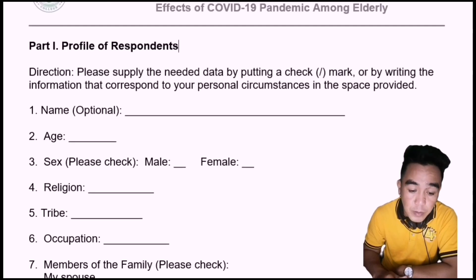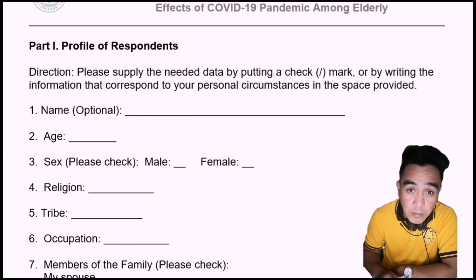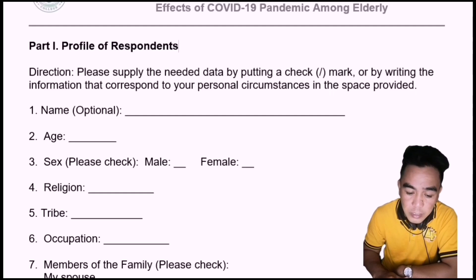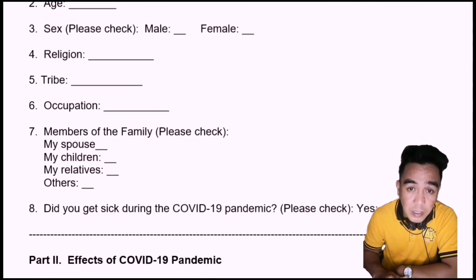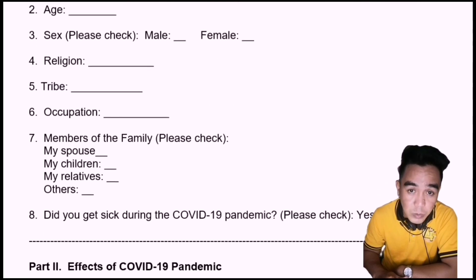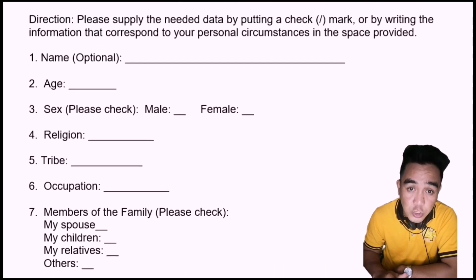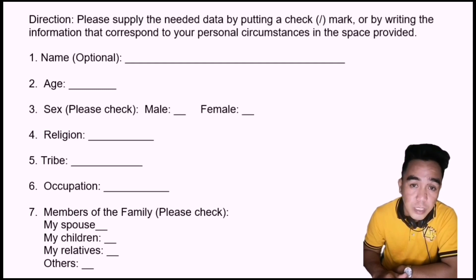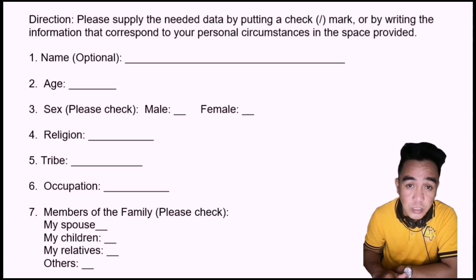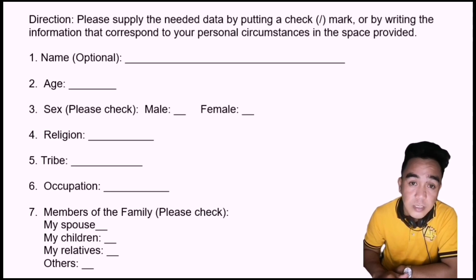Under Part 1, which is the profile of the respondents, the direction must state it clearly and be easy to understand. In determining the different scales to be included under Part 1, we need to make sure that the scale to be used has a significant connection, relationship, or relevance to your study.